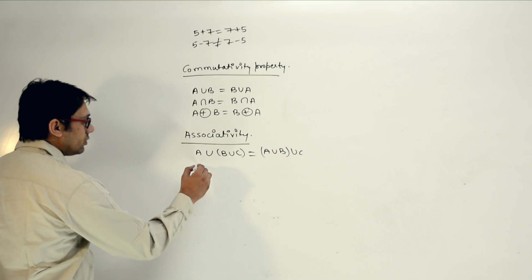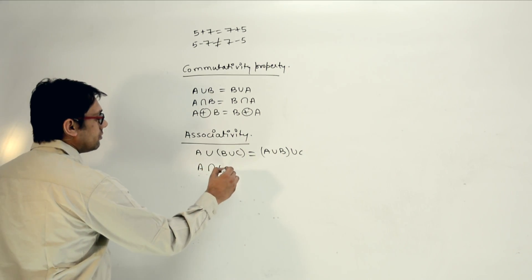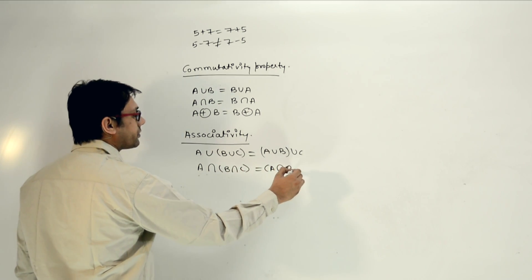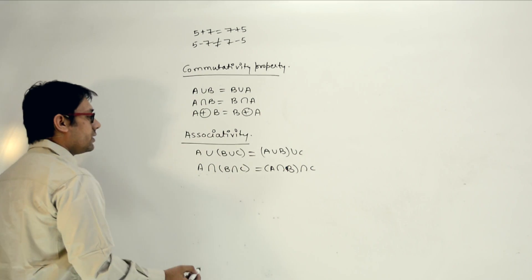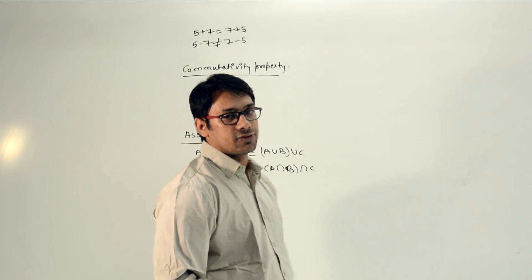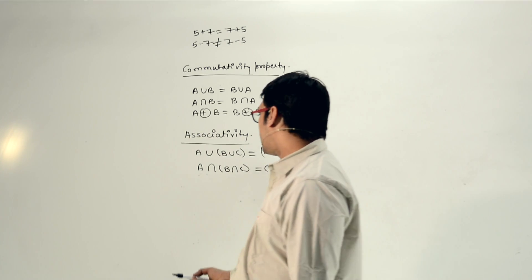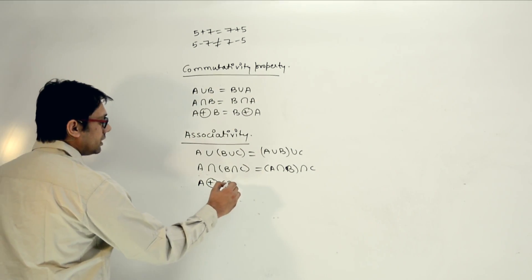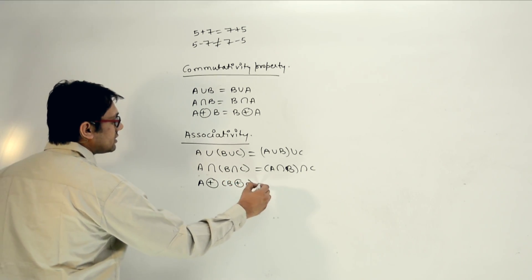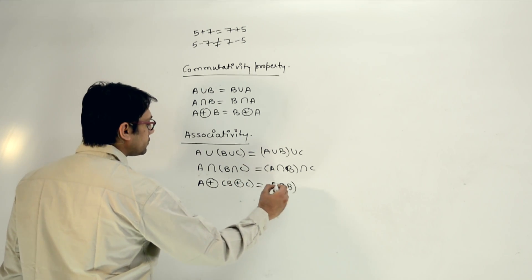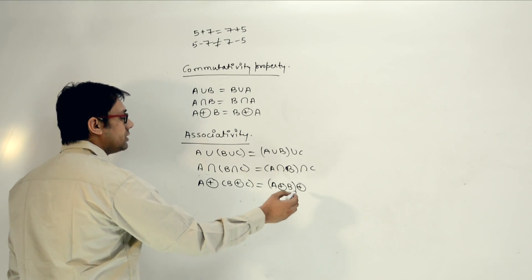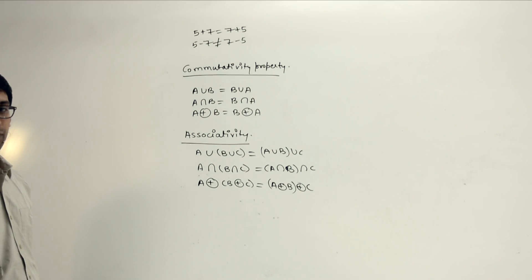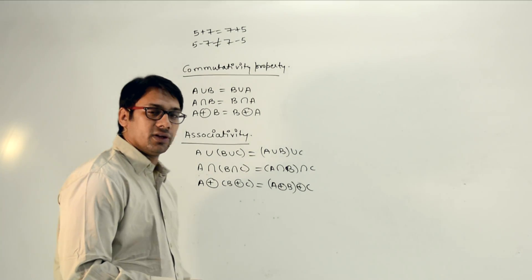In the same way, we can do A intersection (B intersection C), which is equivalent to (A intersection B) intersection C — this property is also valid. Similarly, A symmetric difference (B symmetric difference C) equals (A symmetric difference B) symmetric difference C. So all three operators follow the associativity property.